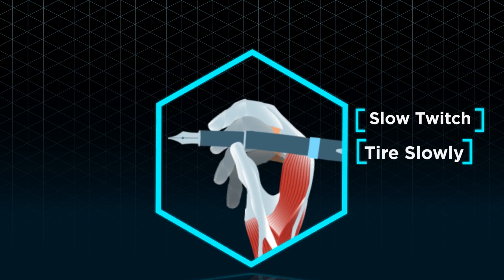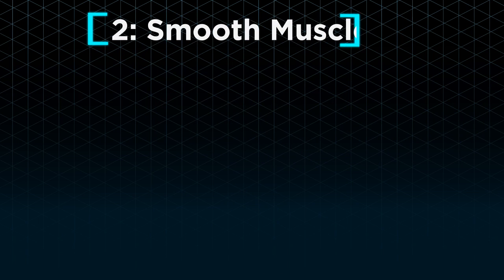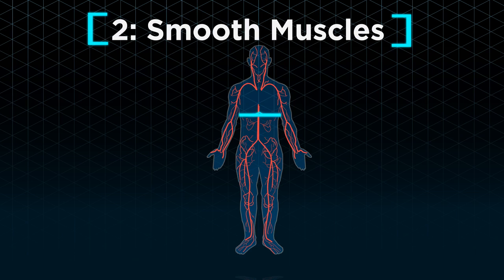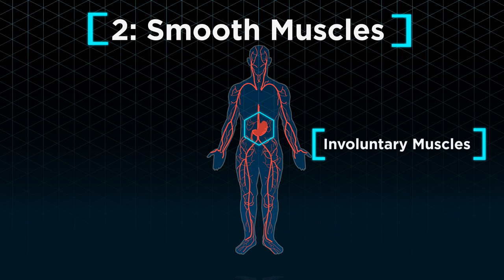Smooth muscles, which make up your blood vessels, stomach lining, and other organ linings, are involuntary muscles as their movement is not under our control. For example, it is impossible for us to tell our stomach to churn and digest our food faster.